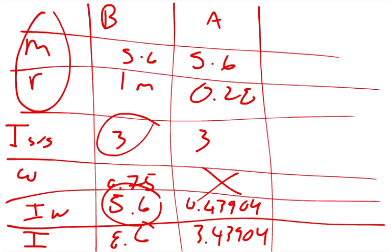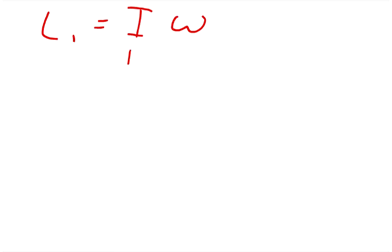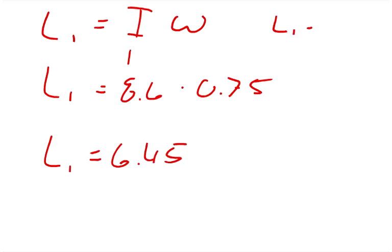So we can go ahead and say that L1, the angular momentum in the first place, is equal to I times the angular speed. The moment of inertia we said was 8.6. So L1 is equal to 8.6 times the angular speed we said is 0.75. And so L1 equals 6.45.